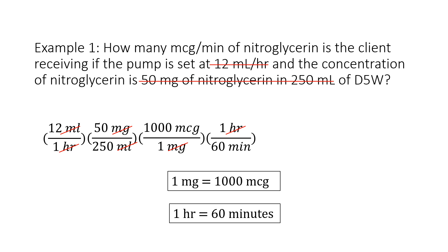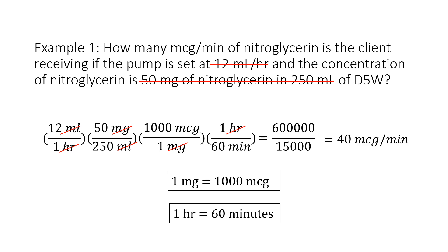I'm ready to do the multiplication. I multiply the numbers on top and I get 600,000, then I multiply the numbers on the bottom and I get 15,000. Then I divide to get 40 micrograms per minute.